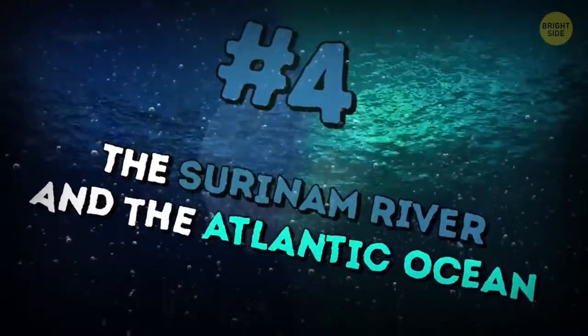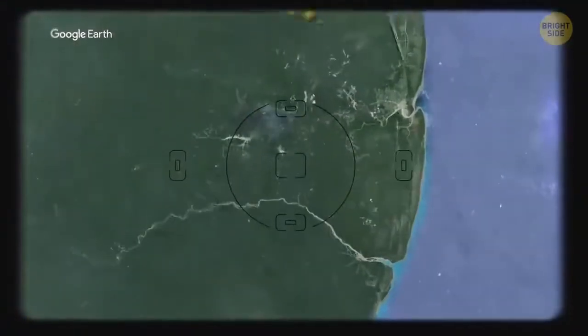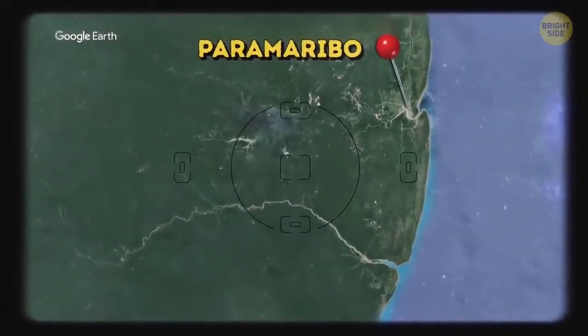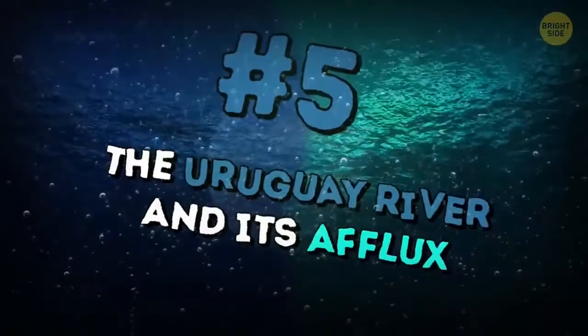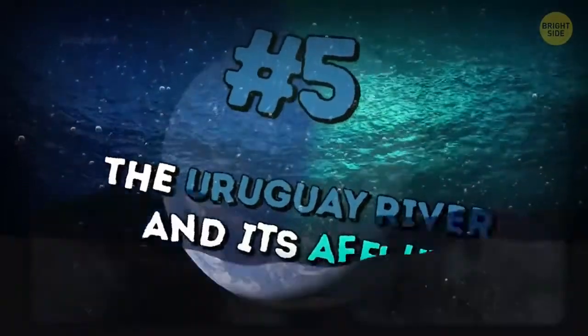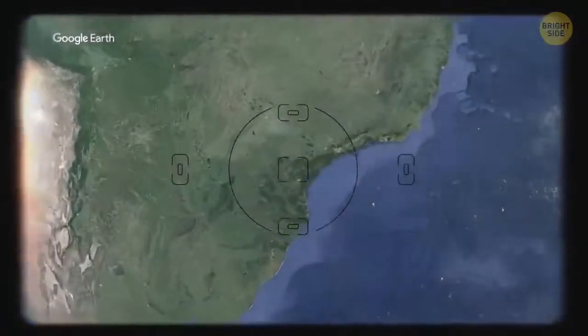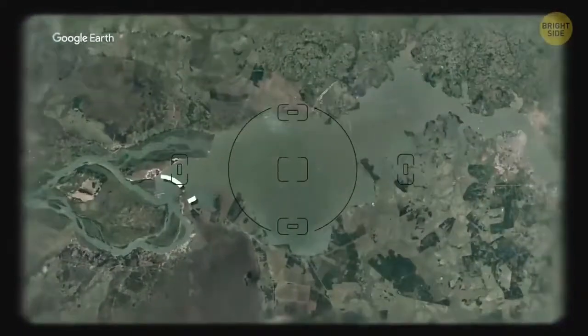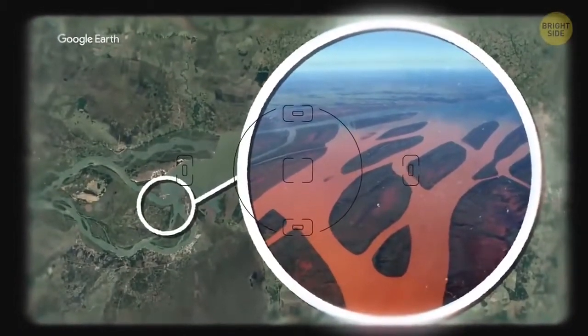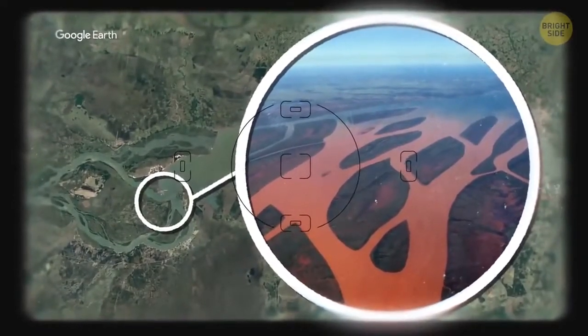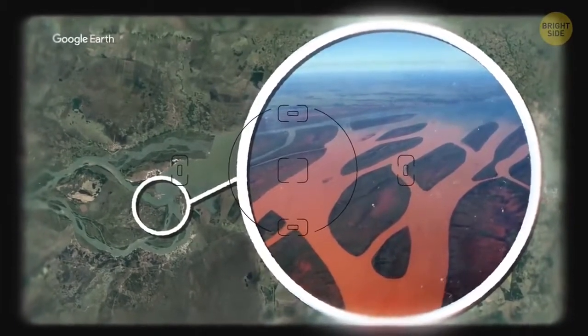The Suriname River and the Atlantic Ocean meet near Paramaribo in South America. The Uruguay River and its Aflux. These two meet in Misiones Province in Argentina. One of them is clean to be used in agriculture, and the other gets almost red because of loam during rainy seasons.